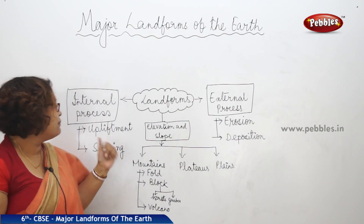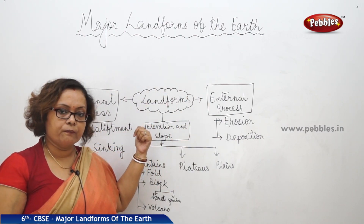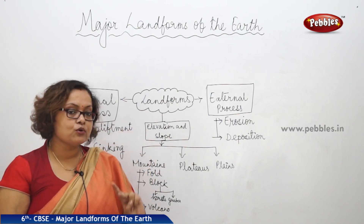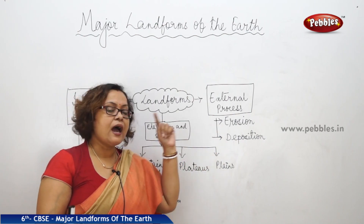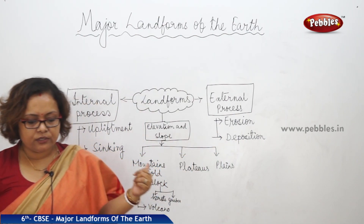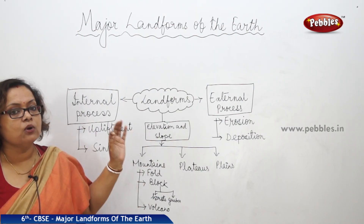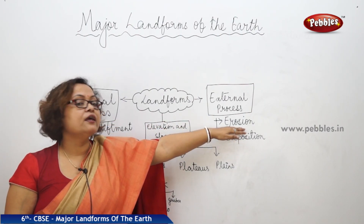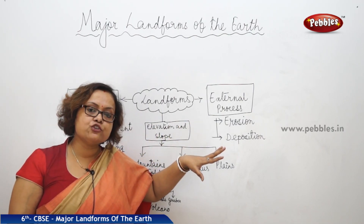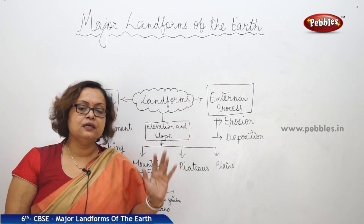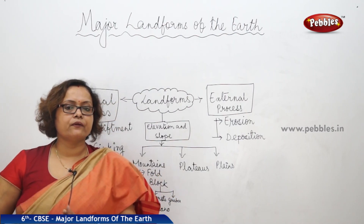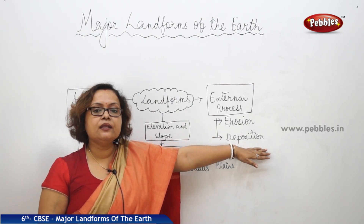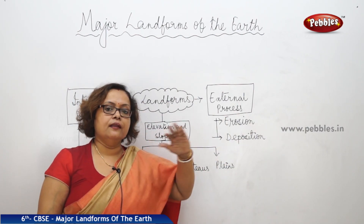The other reason for landform change is external process. We can see two types of external process that change landforms: erosion and deposition. Erosion is the continuous wearing out of the landmass due to wind or water bodies. If there are no trees, due to air and water, soil moves from one place to another, causing erosion. The material moving out then deposits in one place — this is known as deposition, which also changes the face of the land.